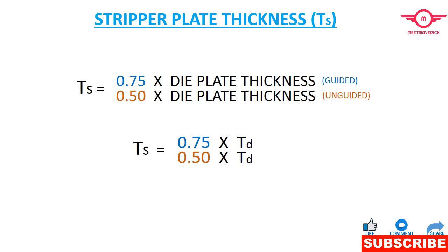Now lastly, we need to calculate the thickness of stripper plate, which is denoted as Ts. For that we need again Td, which is die plate thickness. Ts is equal to 0.75 times Td for guided and 0.50 times Td for unguided.